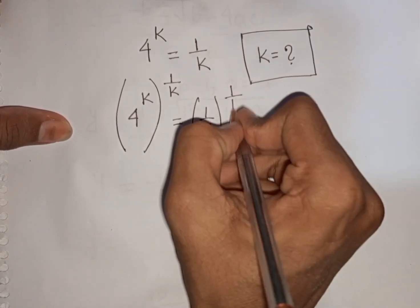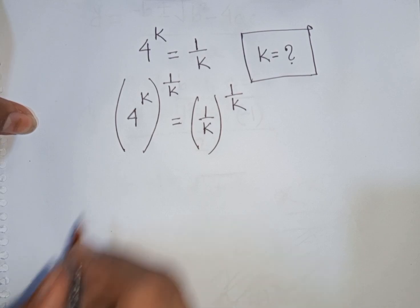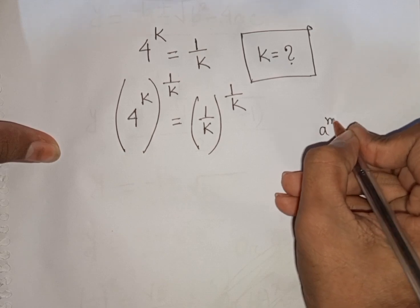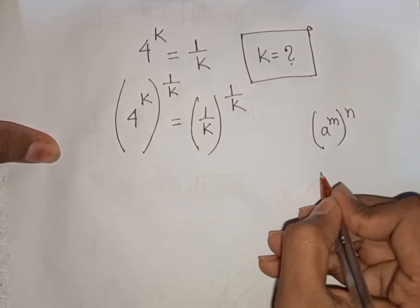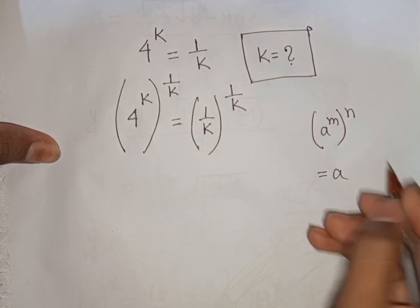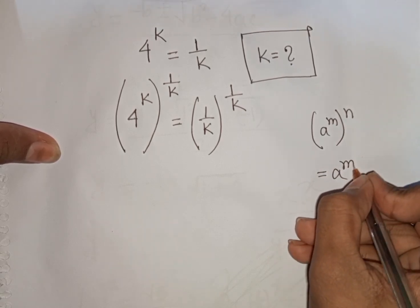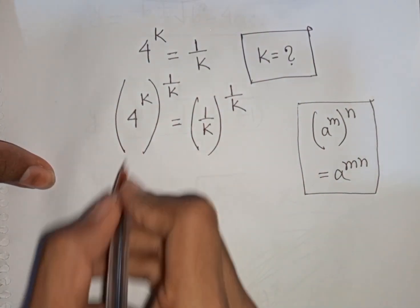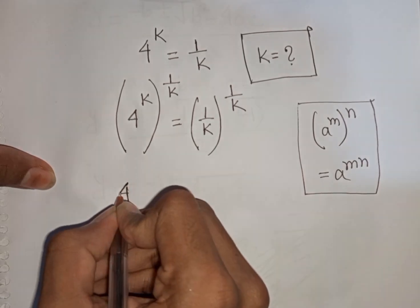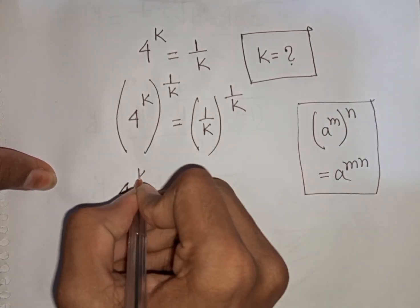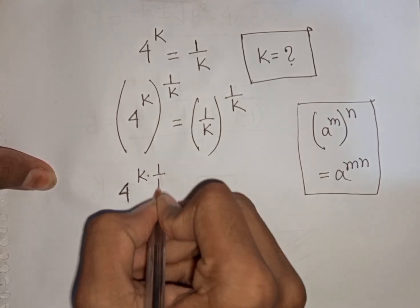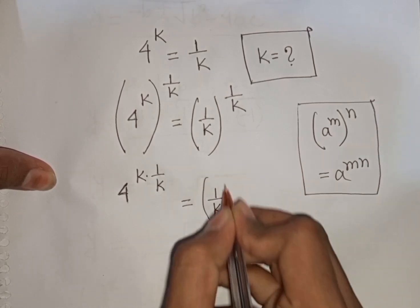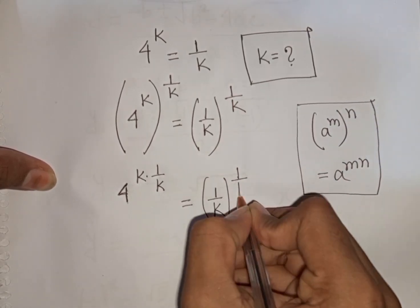Multiply by power of 1 by k. Now here I can apply this exponential rule that a power m, bracket power n, is equal to a power of m times n — that means it will be mn. So according to this formula I can write here 4 power of k times 1 by k, then is equal to 1 by k bracket power of 1 by k.